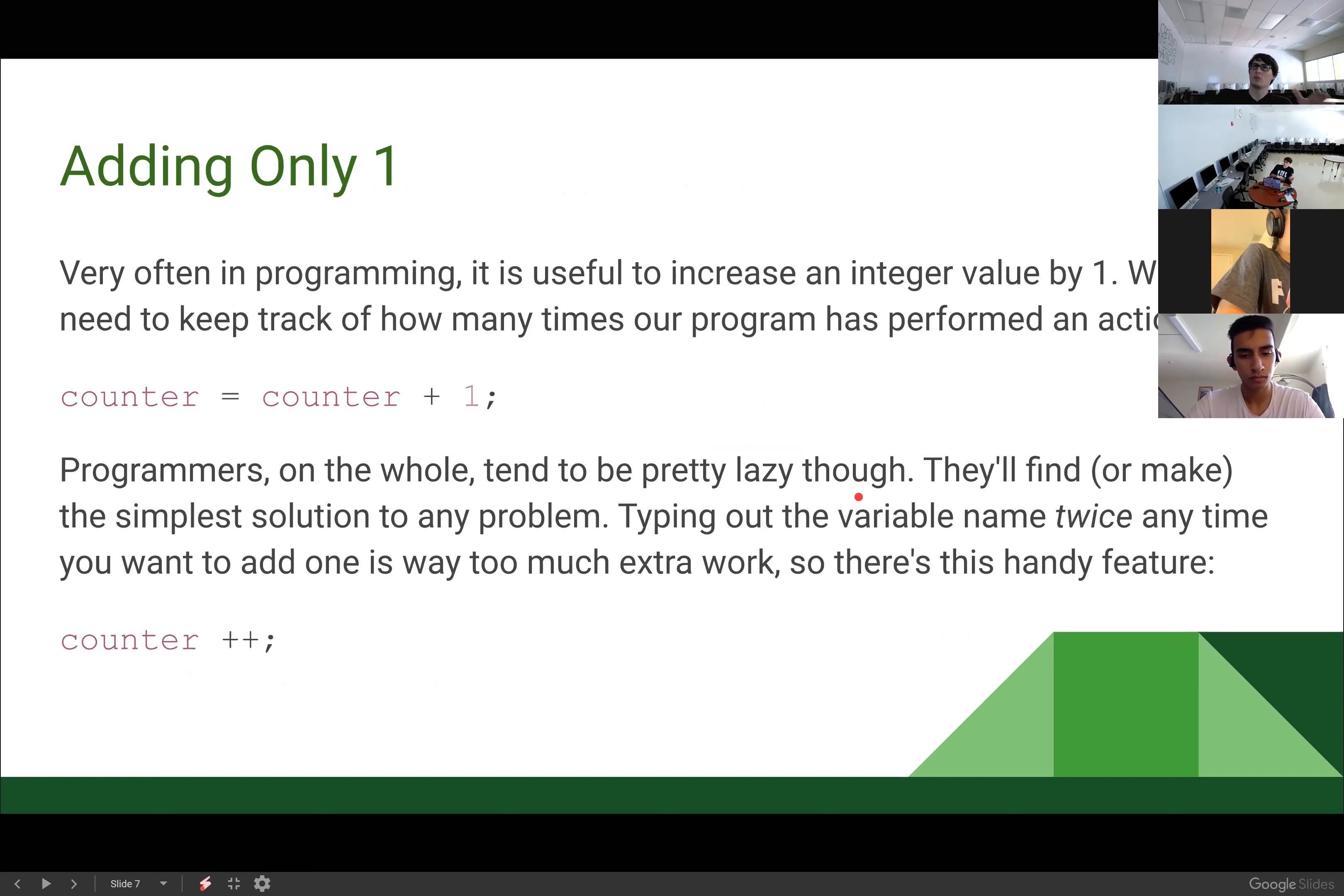So very often when we are doing code, it is useful to increase an integer value by one. We will often need to keep track of how many times a program has happened or a program has done something. We need to increase a value by one over and over and over again. So we can do that by saying counter if I have a variable named counter equals counter plus one.